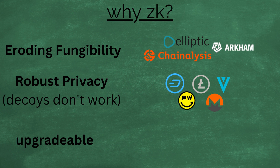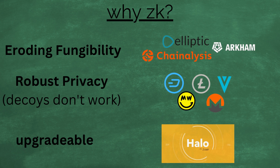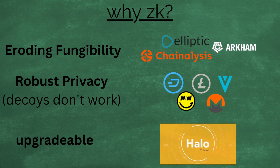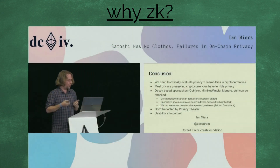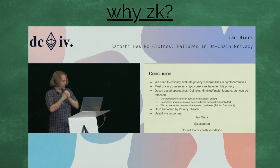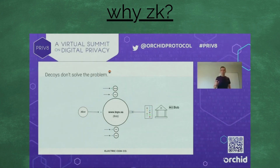Zcash's latest proof system, Halo, is upgradable, meaning other projects that have built on top of Halo can share their advancements with Zcash, and vice versa. This is all without the need for any kind of trusted setup ceremony. These decoy-based approaches just don't work, and in general, we need to get better at evaluating these things. We need to avoid having people do privacy theatre. The concept of decoys is what you instinctively go to, and it can't work.